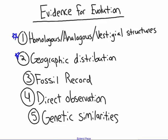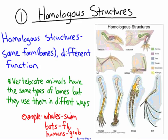For the first one — homologous structures — this is a really huge piece of evidence that supports the theory of evolution. Homologous structures are traits that have the same form but perform different functions. This is key in evolution: these structures have the same orientation and bones, but because of mutations they perform different functions.